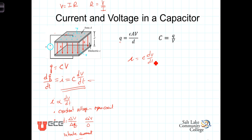So we're going to multiply both sides by dt and divide by C, then reverse the order in which it's written. In doing so, we end up with dV is equal to 1 over C times i dt.